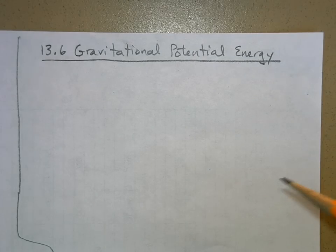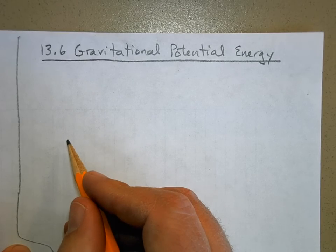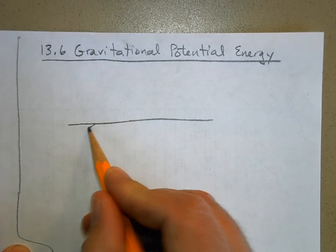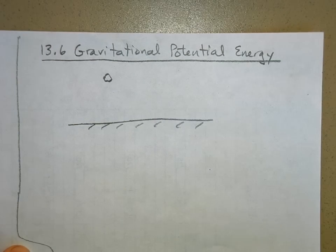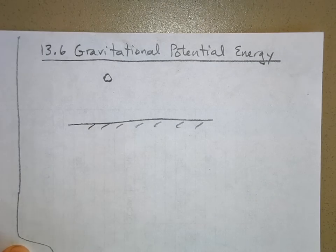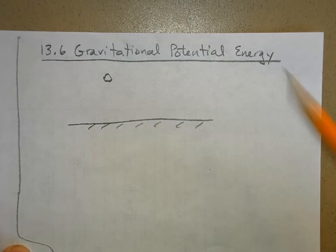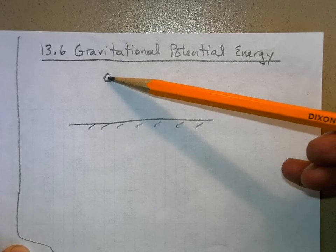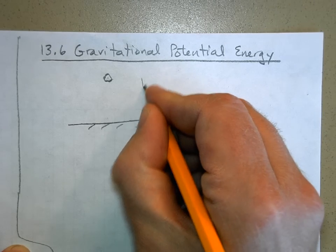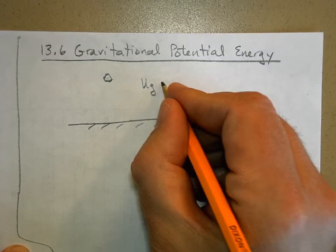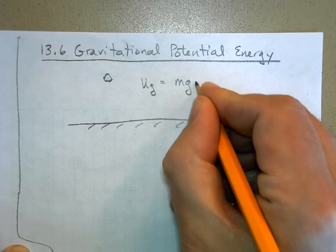We've already dealt with gravitational potential energy when it comes to objects changing their height above the ground. If we have a rock or a baseball held over the ground, it can do work with respect to the ground. Potential energy is energy stored up — it's the work that can be done because gravity can apply a force to the object. The gravitational potential energy is equal to mgy.